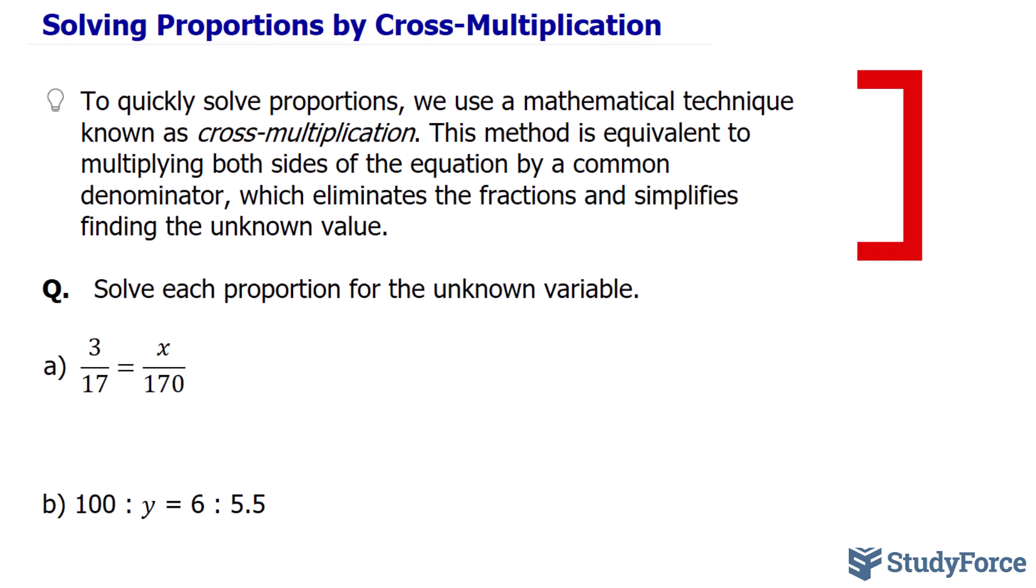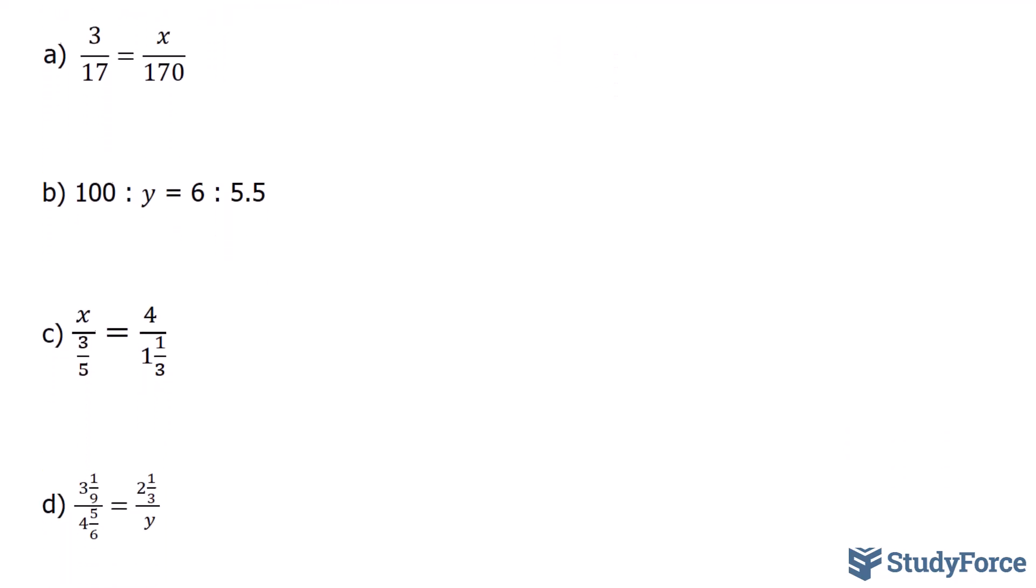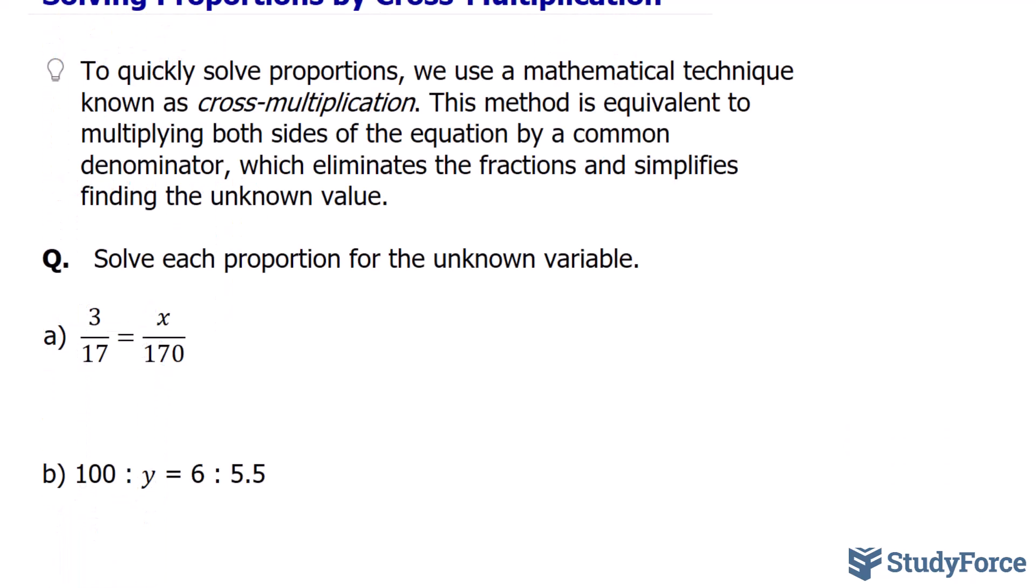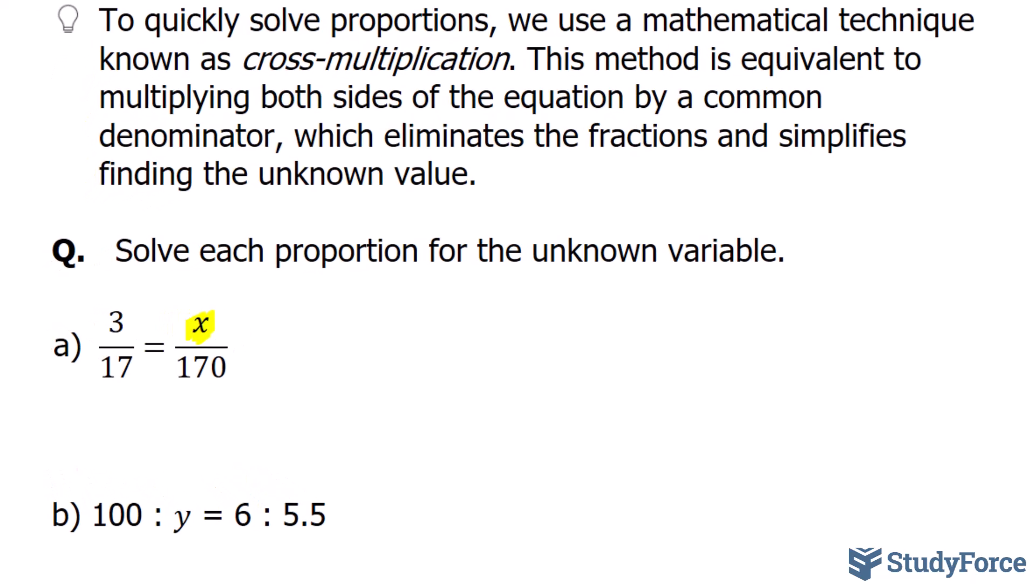In this video, we'll look at four examples where we apply this method. Let's begin with question A. Here, we're expected to solve for x. Now, as the name implies, we have to cross-multiply. And specifically here, we're multiplying this value with that value and 170 with that value.